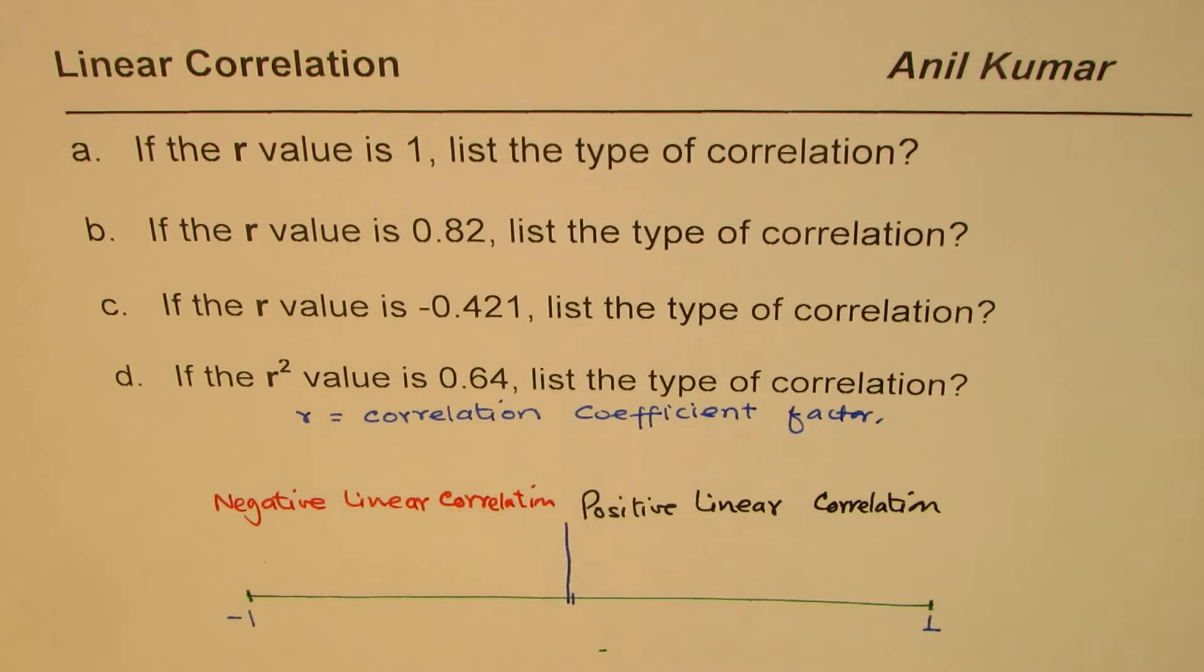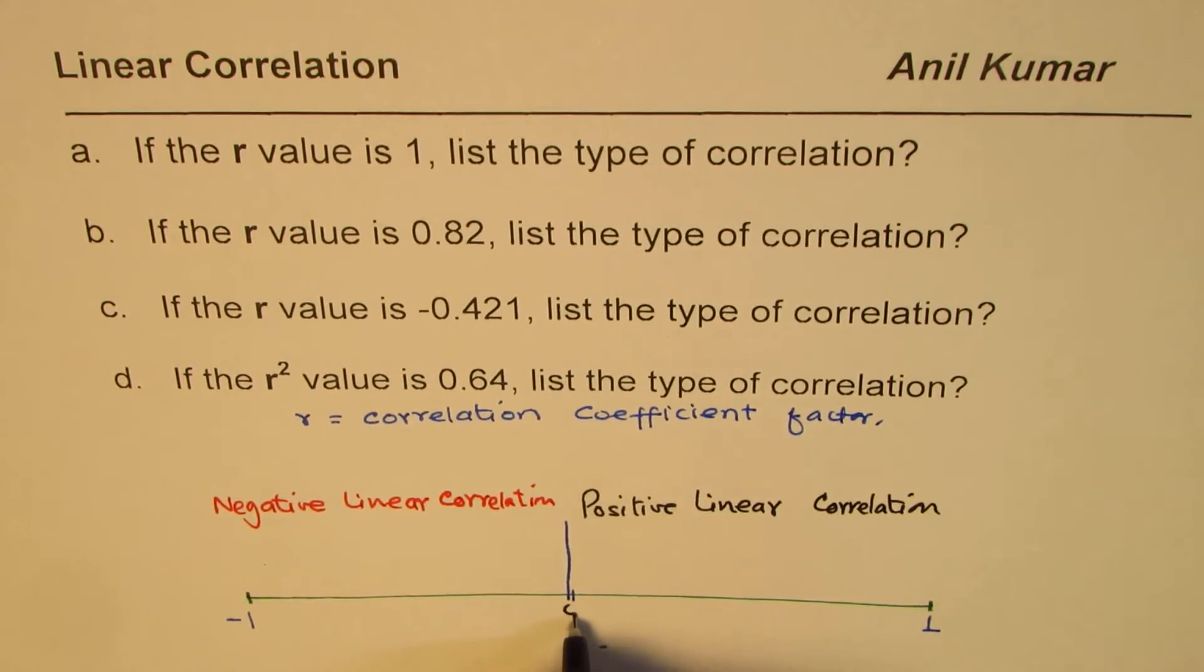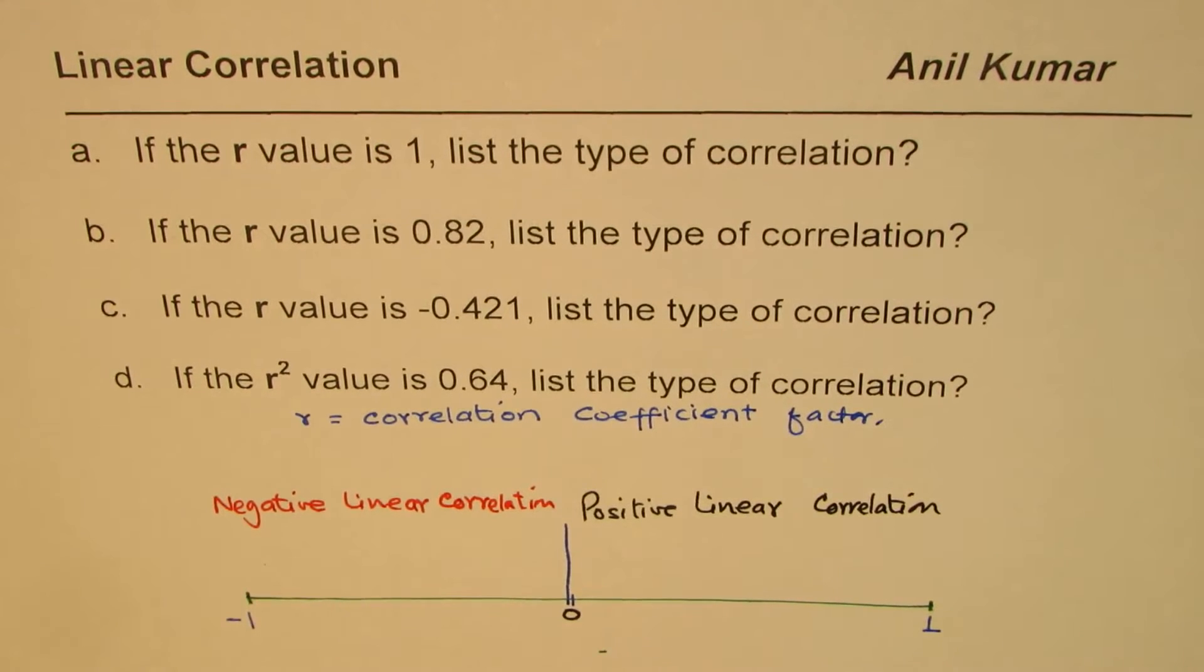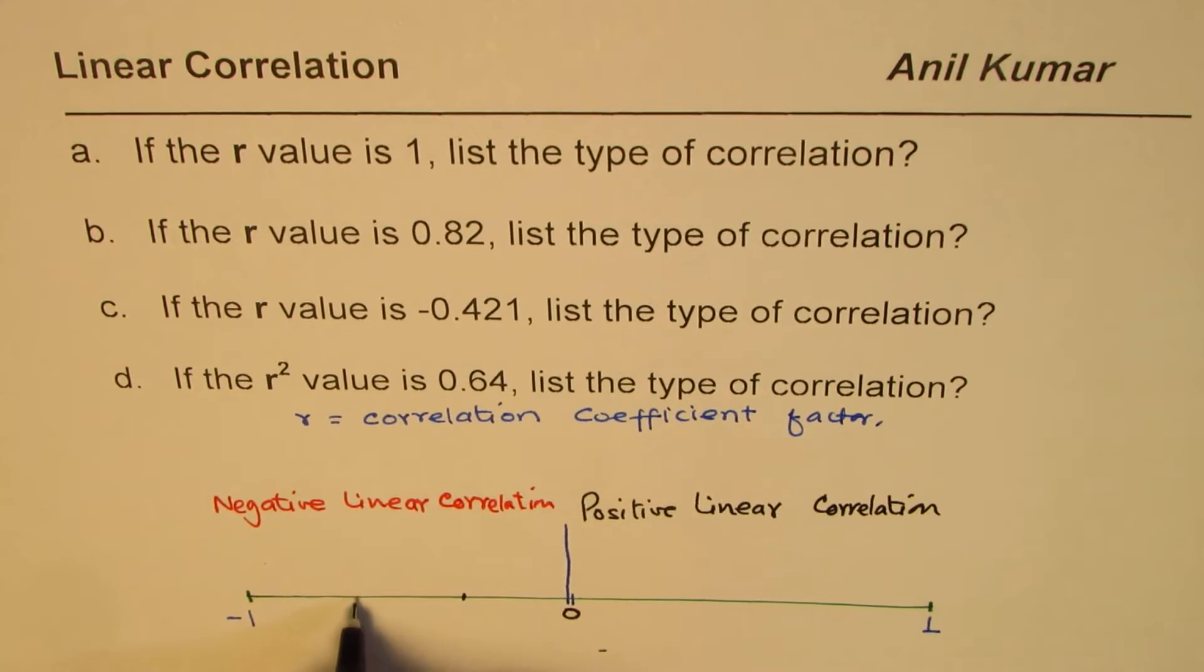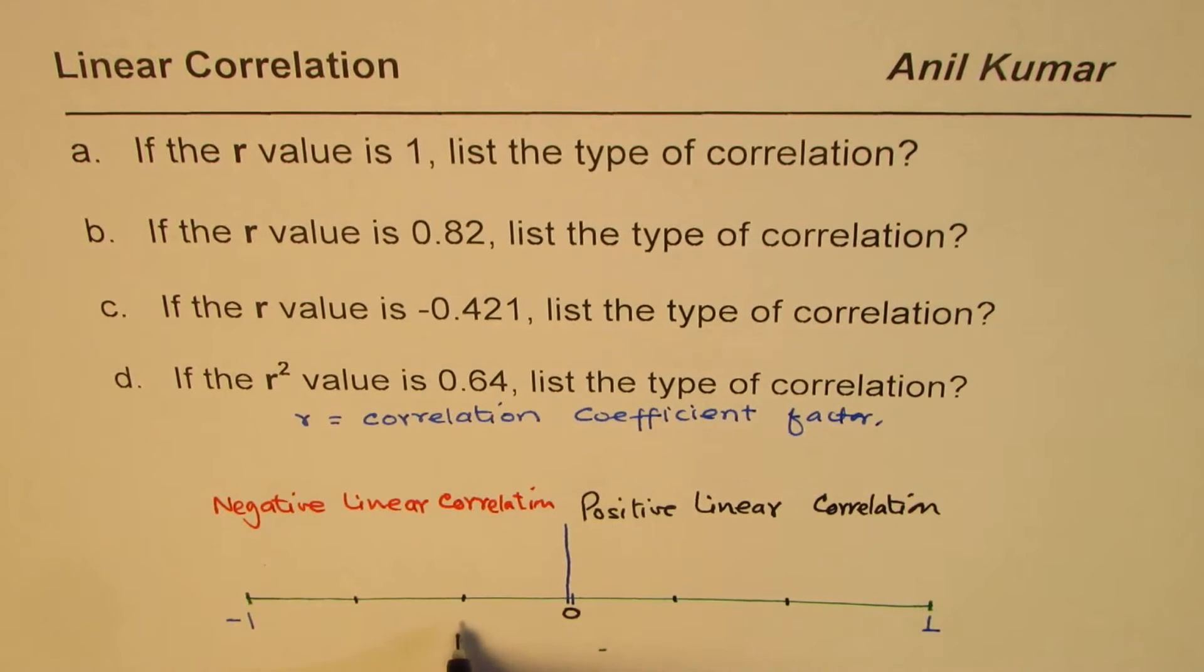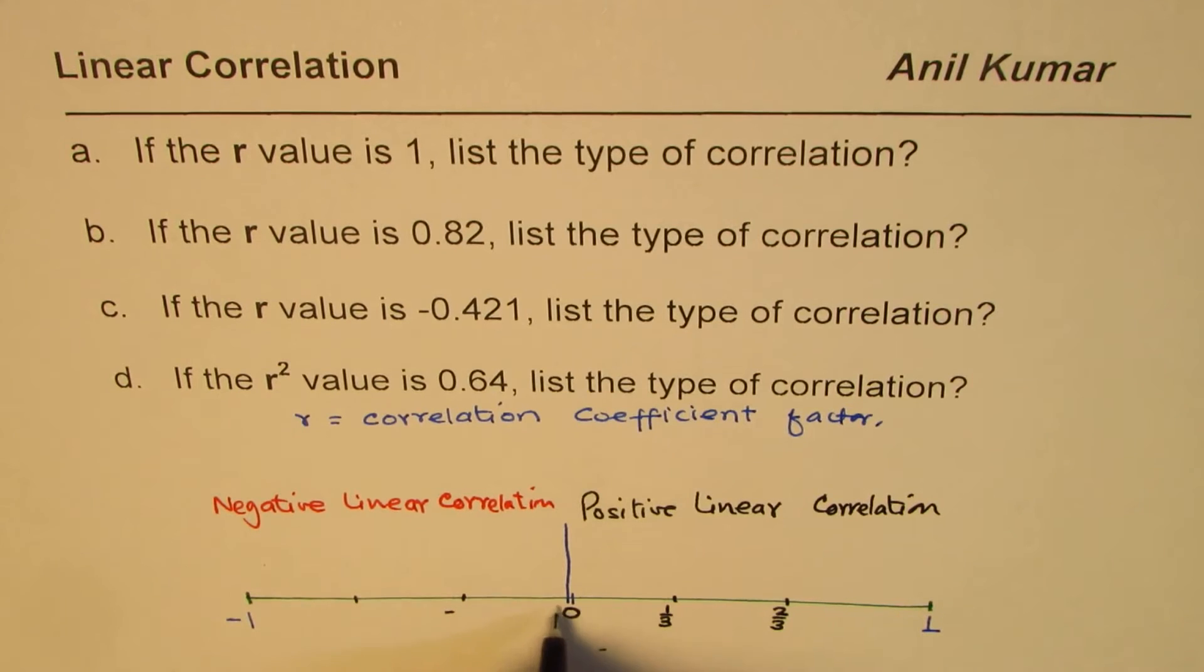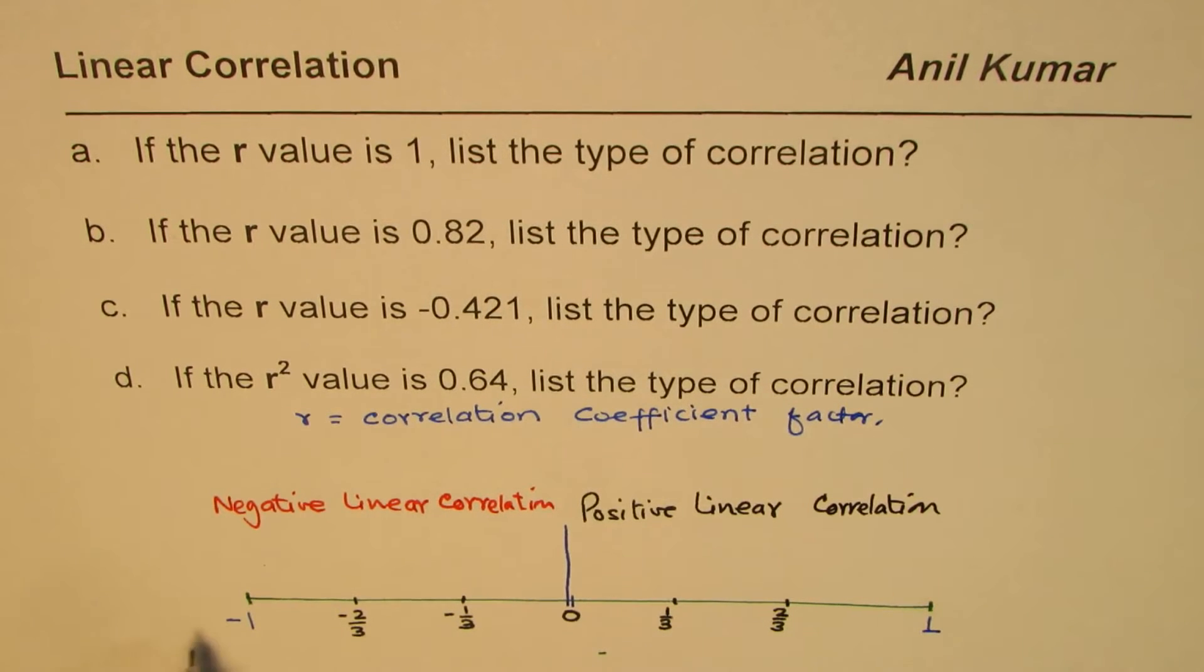And what the values can be. Values can be from minus 1 to plus 1, including 0. So now, we divide it into three equal intervals on either side. So we say, if it is on positive side, 1 over 3, or it could be 2 over 3, or 1 which is 3 over 3, or it could be within 0 to minus 1 over 3, or minus 2 over 3, or minus 3 over 3, which is minus 1.